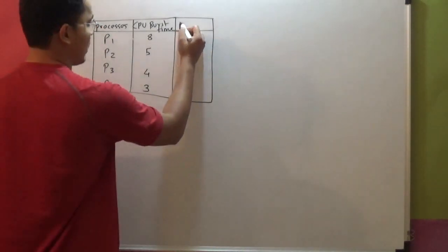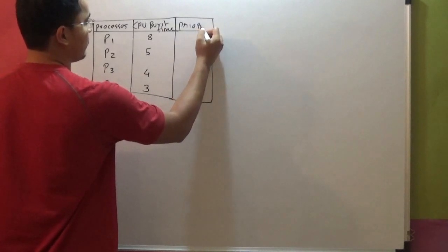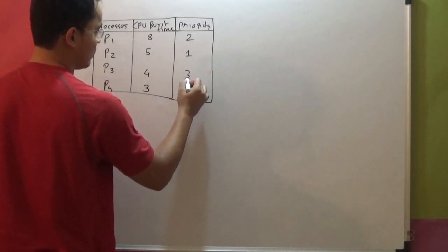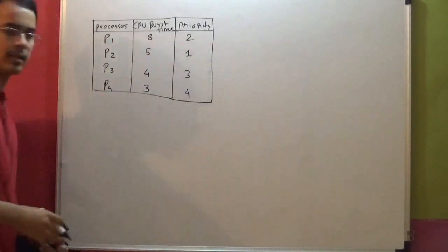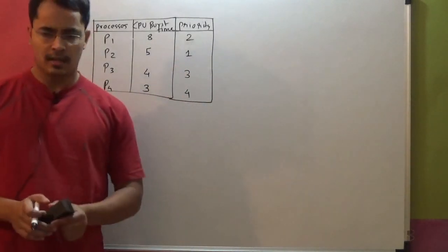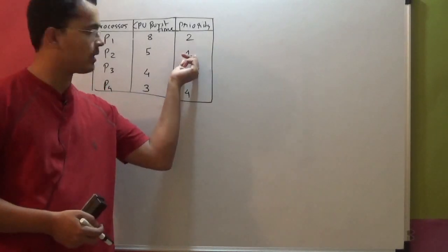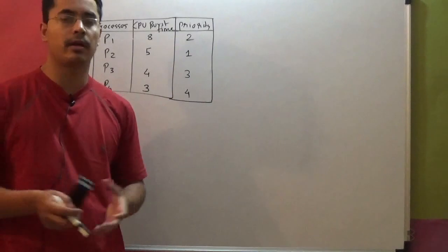Priority. So just priority: 2, 1, 3, 4. Here the priorities are also given. The convention for priority is, the lower the number of priority, the lower the number means highest priority.